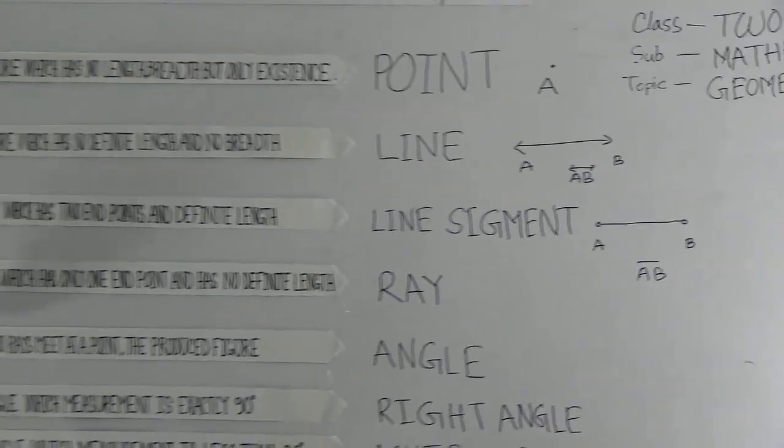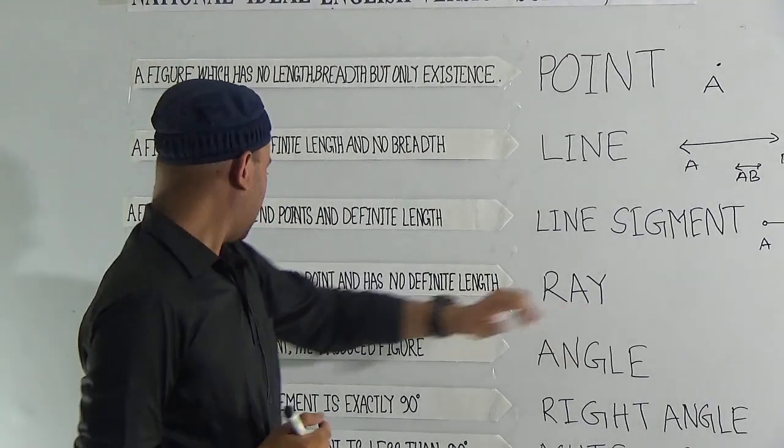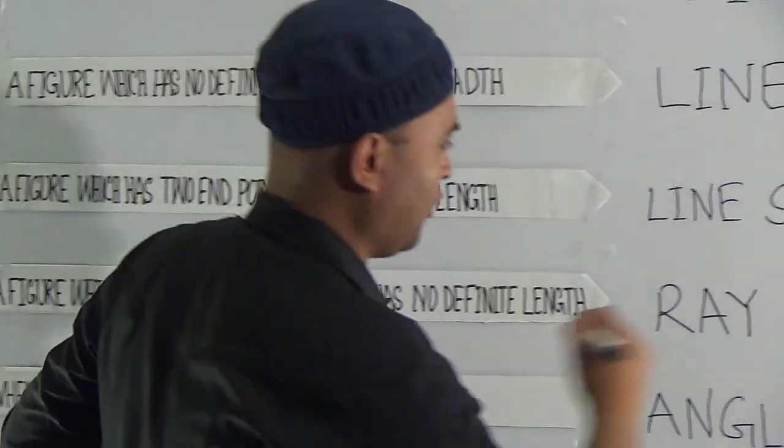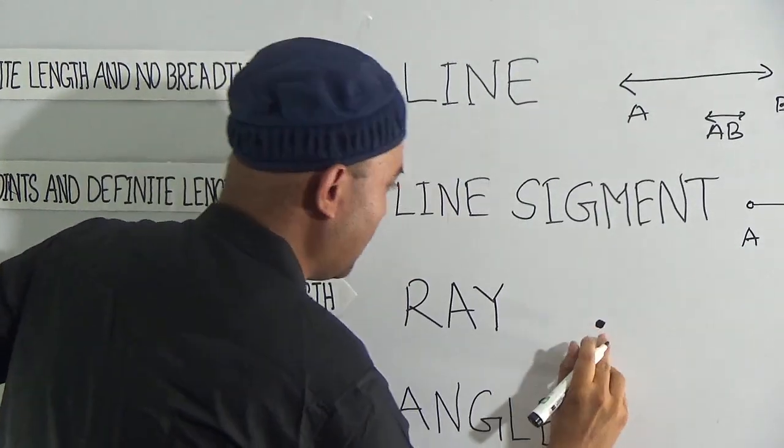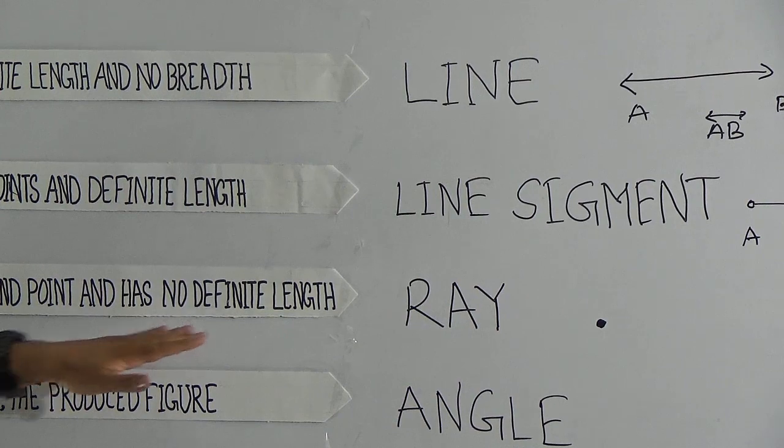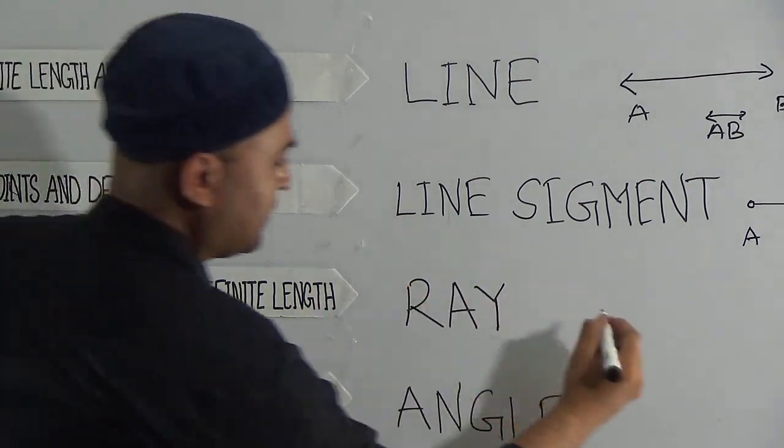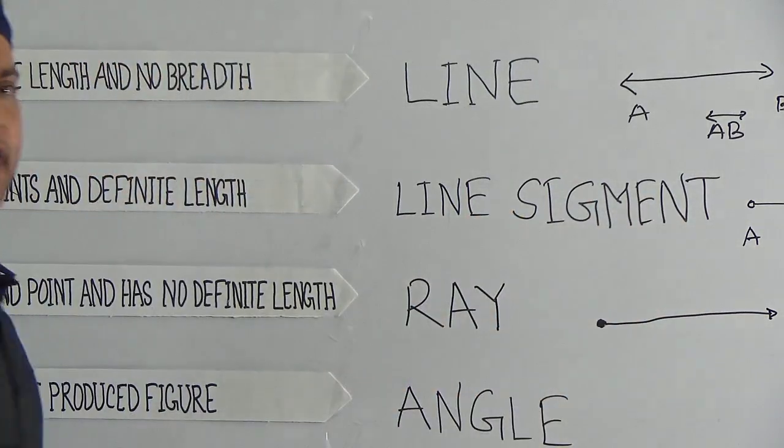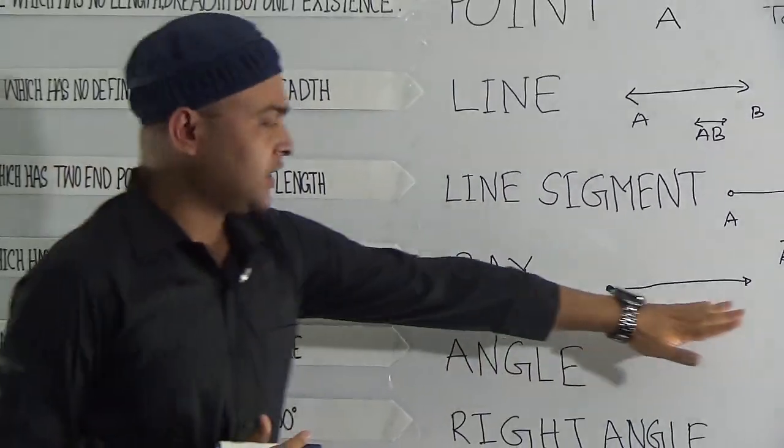If we consider A and B here, then AB is a line. Next is ray. Ray is a figure which has only one end point and has no definite length. This ray will go forever, moving and moving. So this is called the ray.